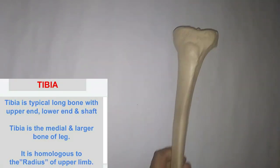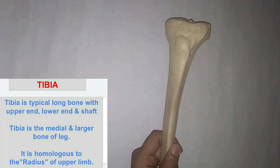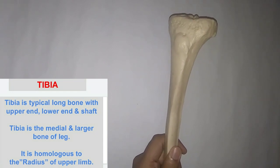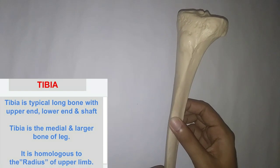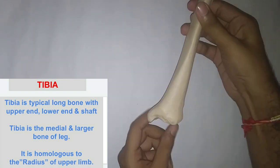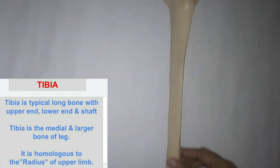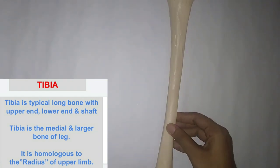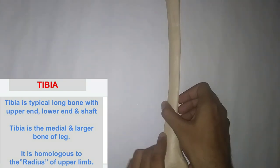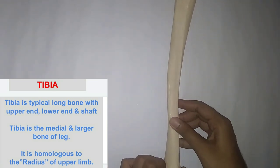Hello everyone and welcome back to our channel. Today we are going to discuss about the tibia. The tibia is the medial side bone of the leg and it is larger than the lateral side bone, which is the fibula. Like other typical long bones, it has an upper end, a lower end, and a shaft. This is the anterior view, posterior view, medial view, and lateral view of the tibia.